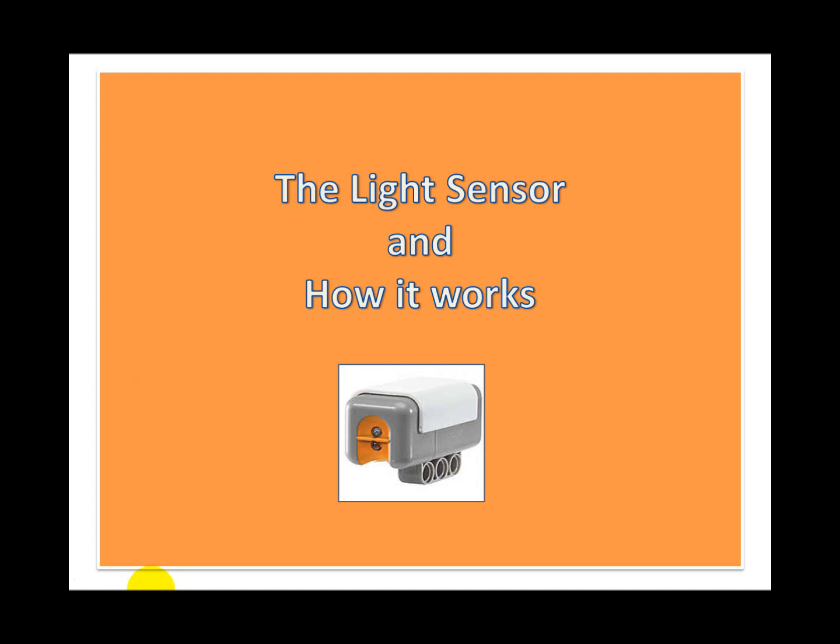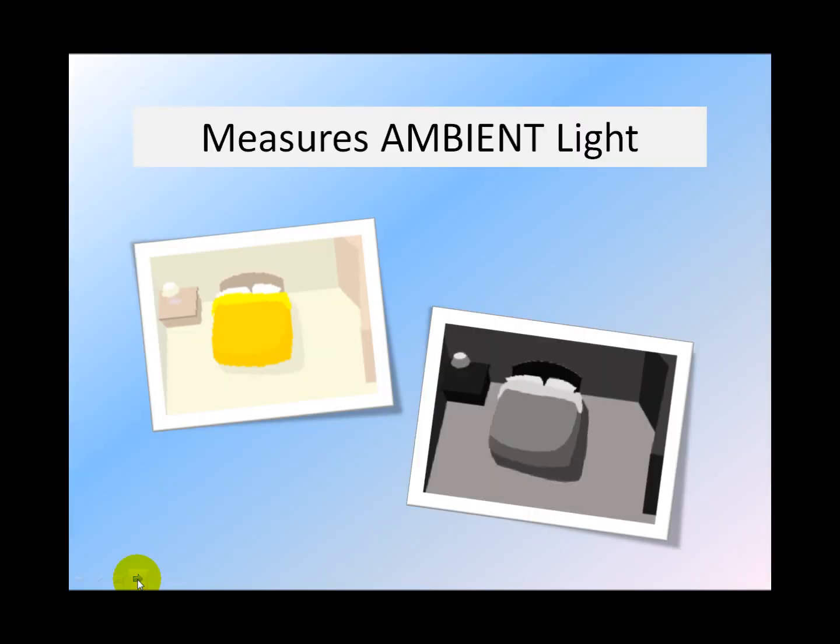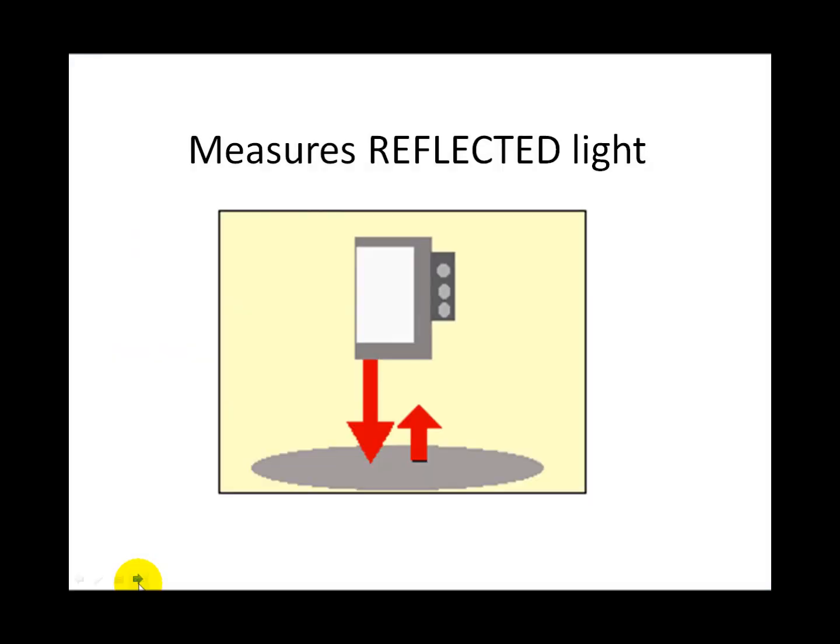In this video you will learn about the light sensor and how it works. The light sensor can measure two kinds of light: it can measure ambient light, which is the surrounding light or room lighting. You can see in this room the light is on, in this room it is dark. It can also measure reflected light.